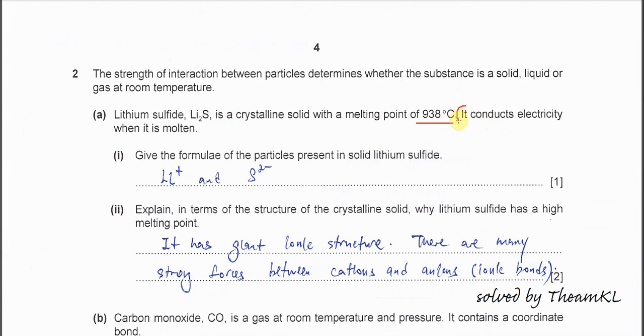The last sentence already told us that it conducts electricity when it is molten. Once it melts, it has cations and anions which are able to carry the charge.